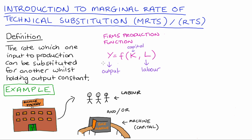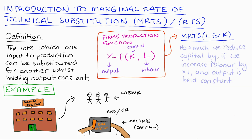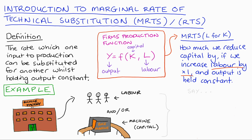Our marginal rate of technical substitution of labour for capital will be equal to how much we reduce capital by if we increase labour by one unit and output is held constant. You might also see these interpretations in terms of a marginal increase in labour rather than a one-unit increase — I'll address that difference at the end of the video.